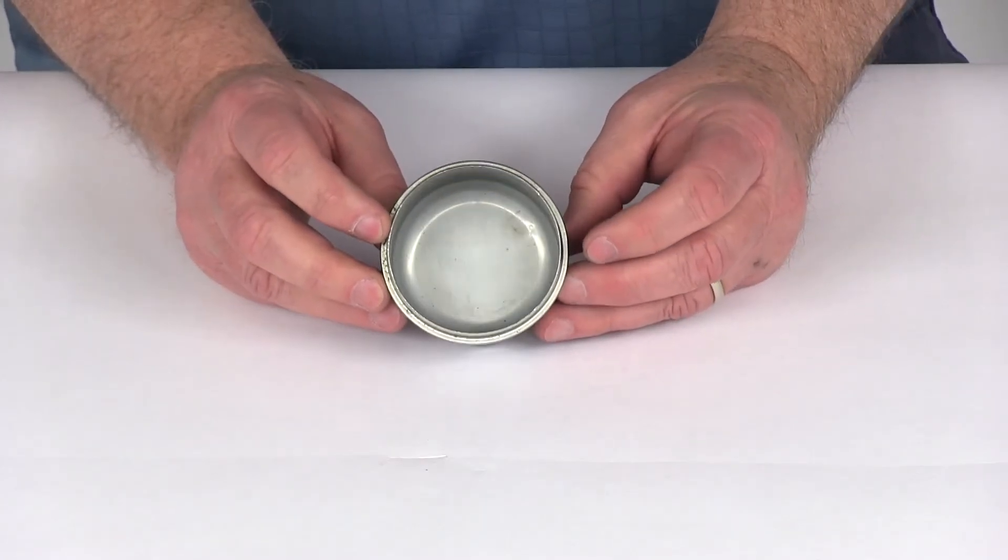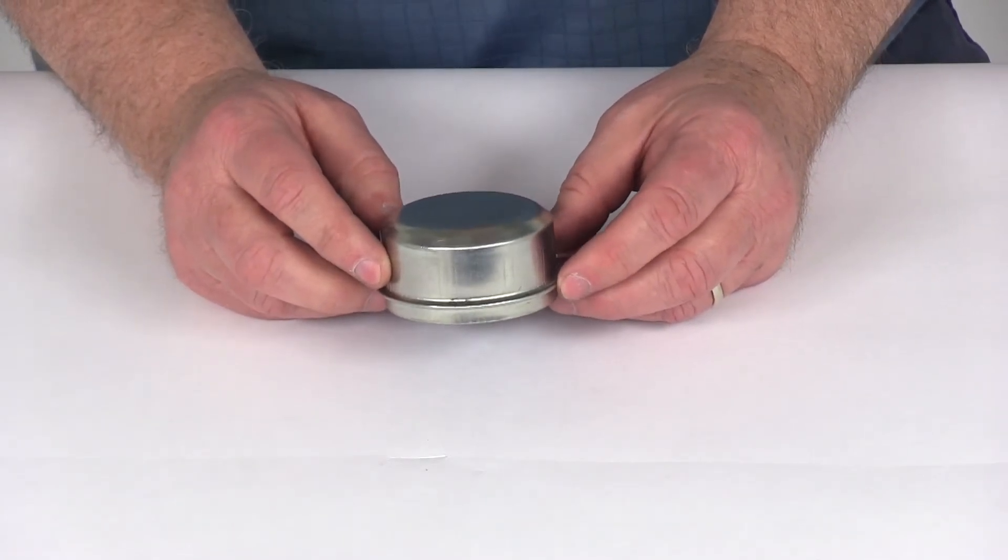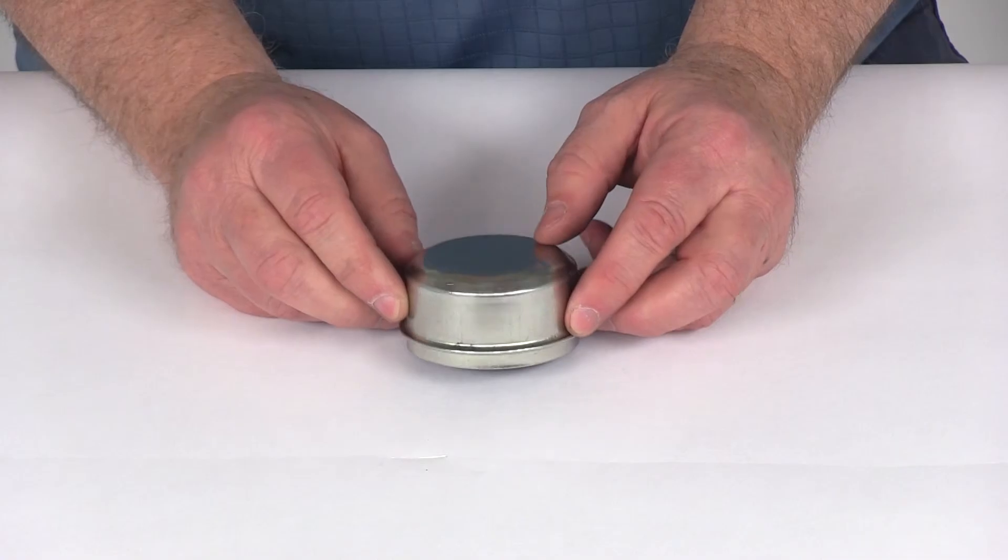But that should do it for the review of the Trailer Hub Grease Cap, number F001520.